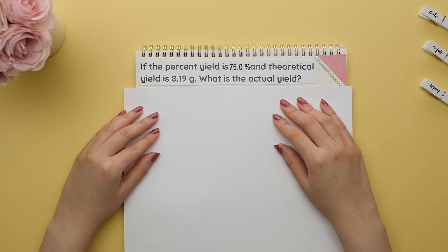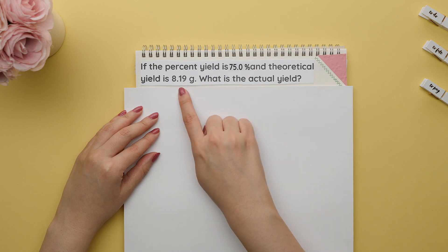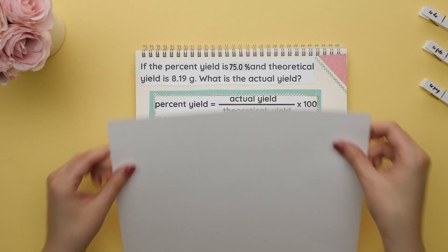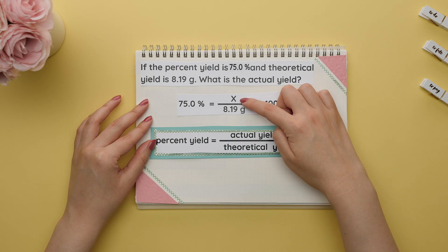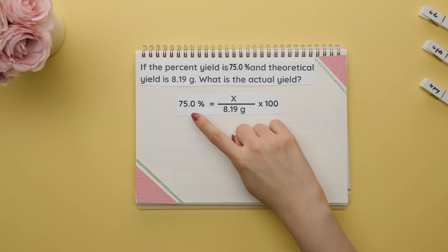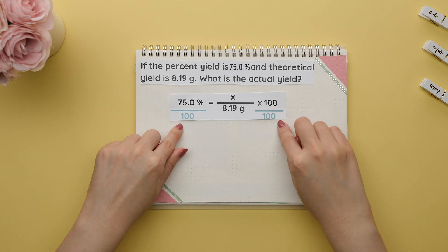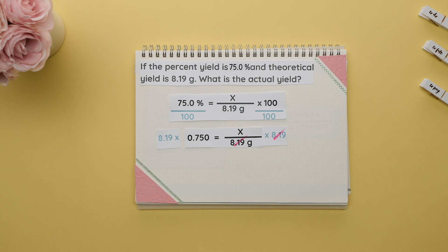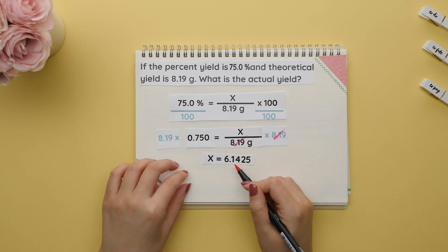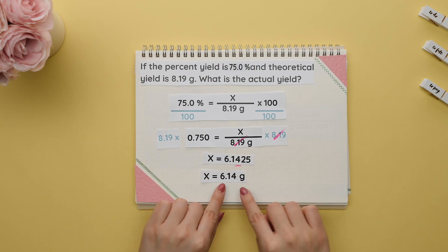Where students get confused is when they are given the percent yield and asked to find either the actual or theoretical yield. If the percent yield is 75% and the theoretical yield is 8.19 grams, what is the actual yield? Start by plugging in what you know, placing x for the actual yield. Convert the percentage to decimal form by dividing both sides by 100, then multiply both sides by the denominator. Round to three sig figs since our lowest number of sig figs is three, giving an actual yield of 6.14 grams.